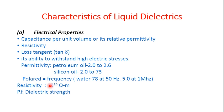Dielectric strength is the most important parameter in the choice of liquid dielectric for a specific application. It mainly depends on atomic and molecular properties of the liquid; however, under practical conditions it mainly depends on the material of the electrode, temperature, type of voltage applied, and gases contained in the liquid. These factors control the breakdown strength and lead to electrical breakdown of the liquid dielectric.